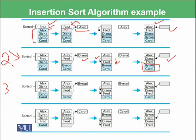In the third step, we have Alex, Diana, and Fred as sorted and Byron and Carol as unsorted. We pick Byron, put Byron in the temporary location, and then start comparing with Alex. When we compared it with Alex, we found that Byron is greater than Alex. So we need a location, and we insert by moving all elements downward.